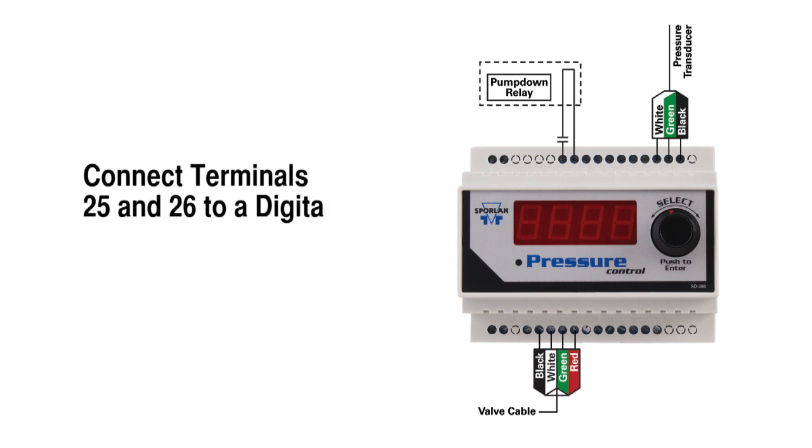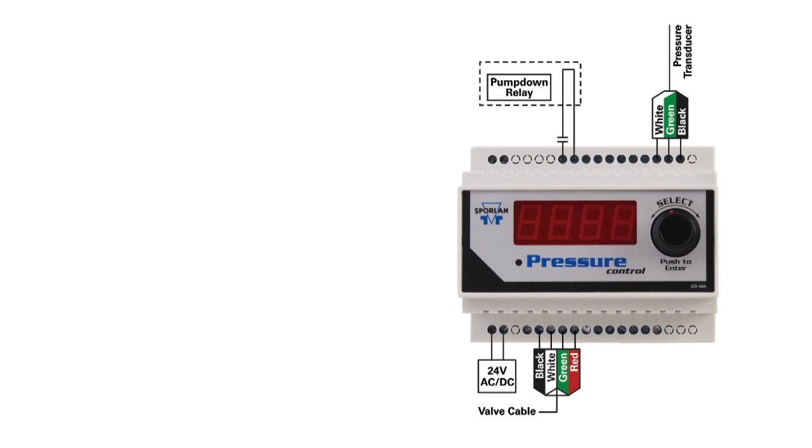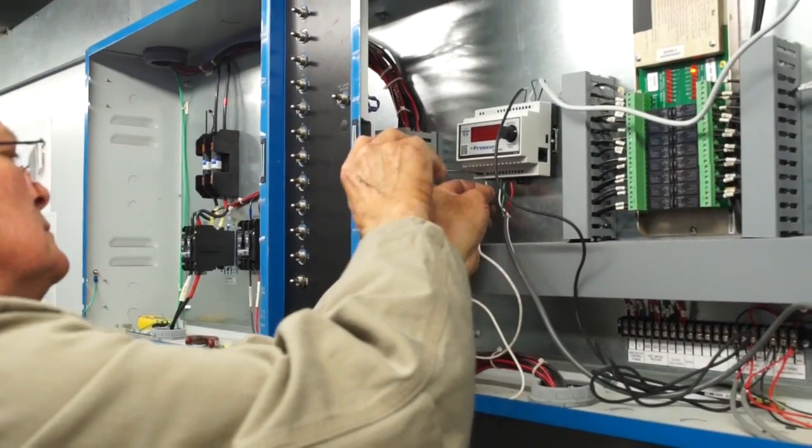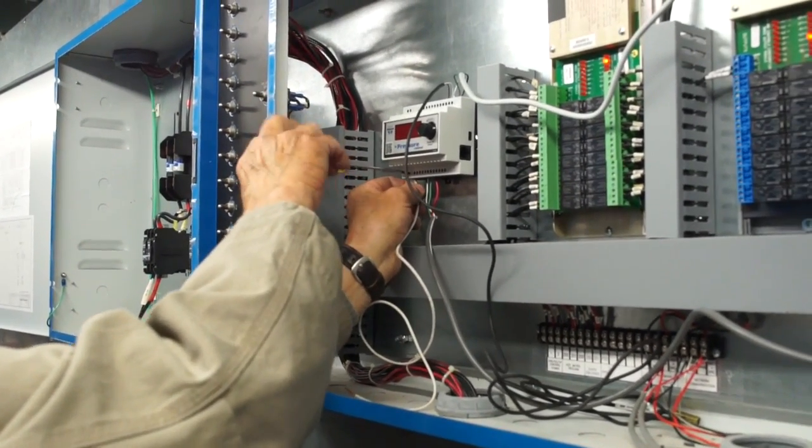Connect terminals 25 and 26 to a digital input. A short or closed contact from an external relay will enable pump down and drive the valve to 0% or 100% based on the pump down direction set in the control. Connect power wires to terminals 1 and 2. Transformer requirements are 24 volt AC or DC at 40 VA.